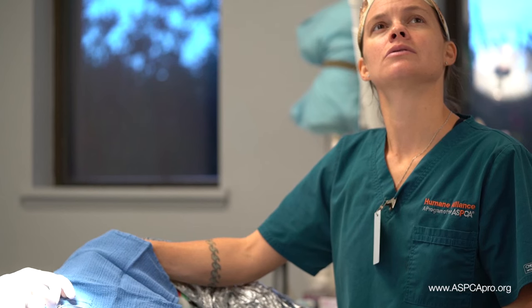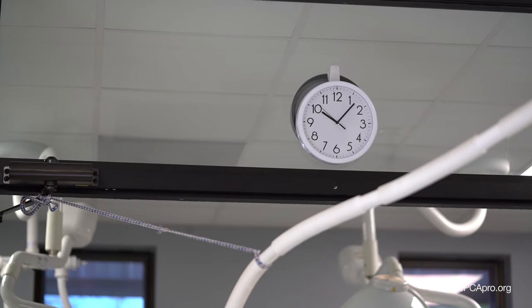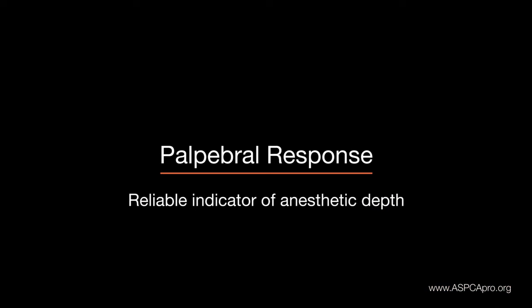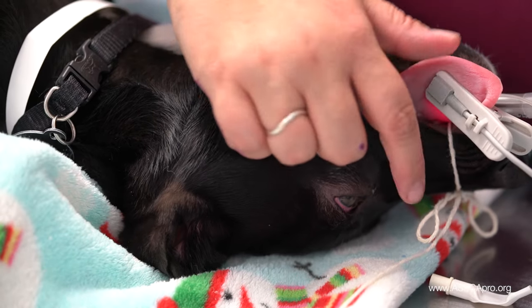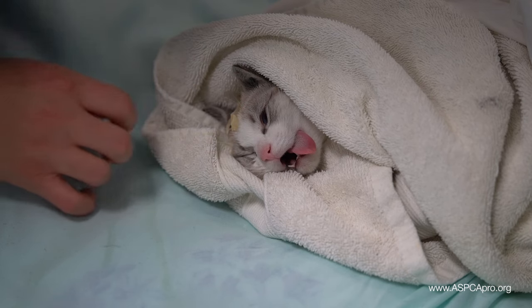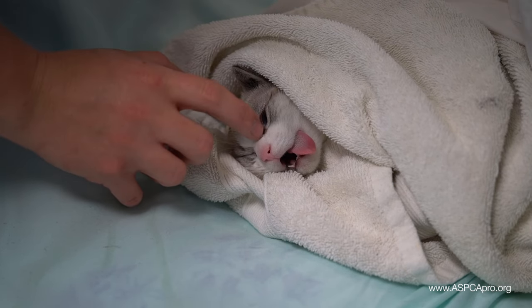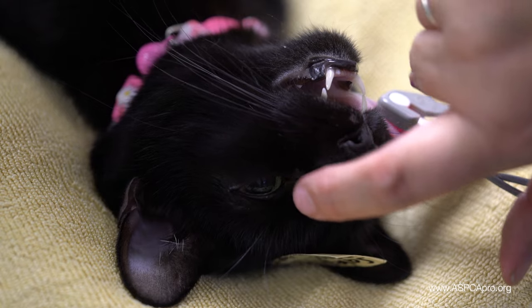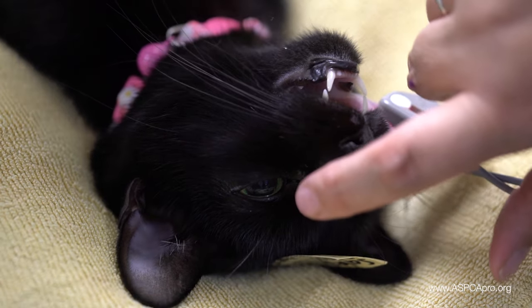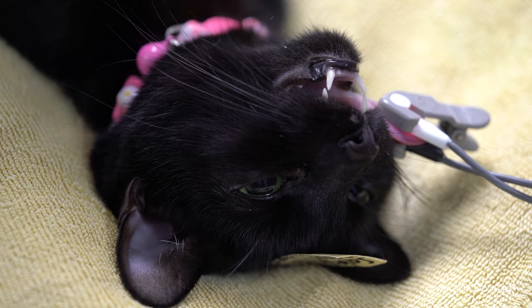Count the number of breaths taken over 30 seconds and multiply by two to get the rate in breaths per minute. The presence of a palpebral or blink response is a reliable indicator of anesthetic depth and is our primary indicator in cats. To check for a palpebral response, gently tap the skin near the medial canthus or inner corner of the eye with a finger to see if the patient blinks.